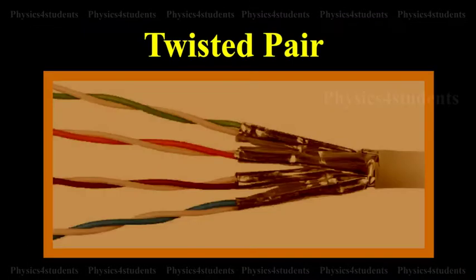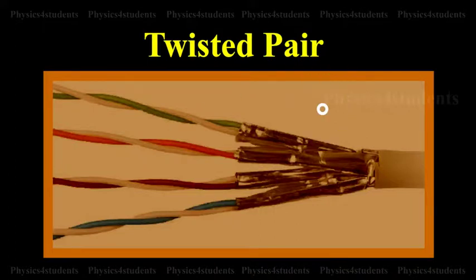Twisted pair cable is the simplest and the lowest cost cable. It consists of two insulated wires twisted around each other in a continuous spiral, as shown. The wire is twisted to minimize external noise.